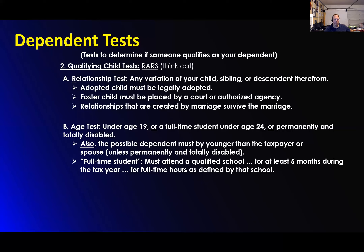Also, the possible dependent must be younger than the taxpayer or spouse. It's a really strange requirement because unless they're totally disabled, you may have nephews and nieces who are technically older than you. It may be possible, but they must be younger than the taxpayer or the spouse.